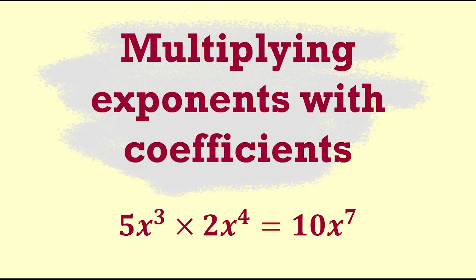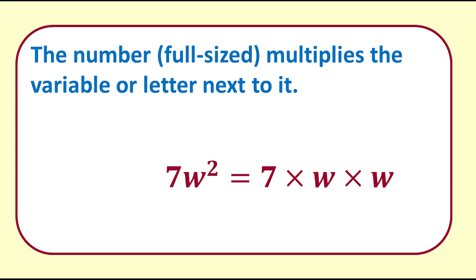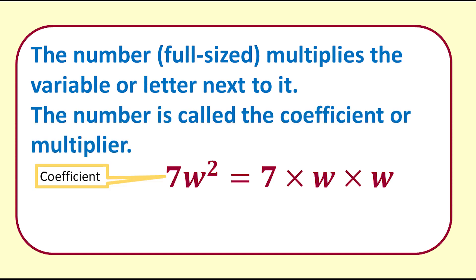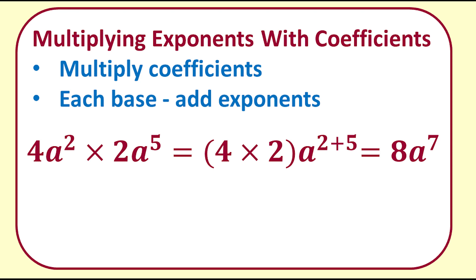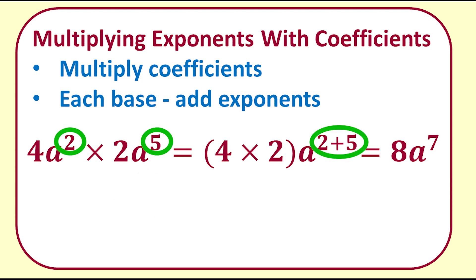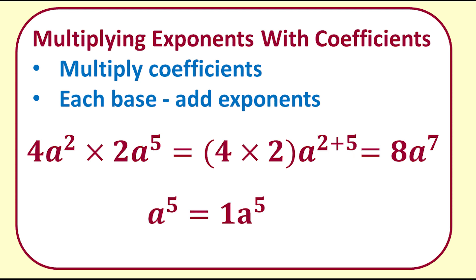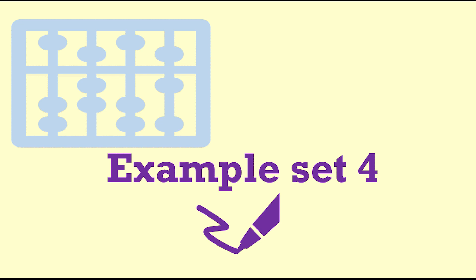How are you doing? Do pause if you need to. The next section is multiplying exponents with coefficients. You can see that there are numbers in two different positions around the letters or variables. The full-size number multiplies the variable or letter next to it and is called the coefficient or multiplier. When we multiply exponents with coefficients, first we multiply the numerical coefficients, then we find the terms with the same base and add the exponents. In this example we multiply the coefficients 4 times 2, the base is a in both terms so we add the exponents 2 plus 5, giving us 8a to the 7. If you have no coefficient, it is the same as a coefficient of 1.